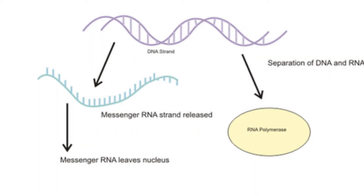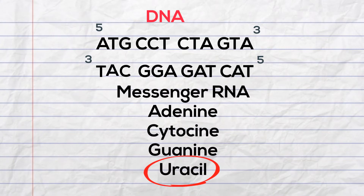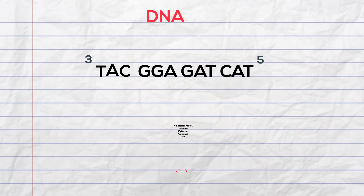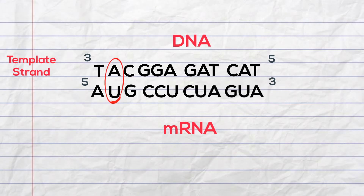Messenger RNA is similar to DNA, but it's also very different. Instead of the nitrogen base thymine, you have uracil. So with the complementary strand of DNA that has unzipped, you are left with a strand of DNA used as a template for the mRNA. T will pair with A, A with U, C with G, and so forth. I will circle the pairings of the U's and A's just for emphasis. This step is part of transcription.